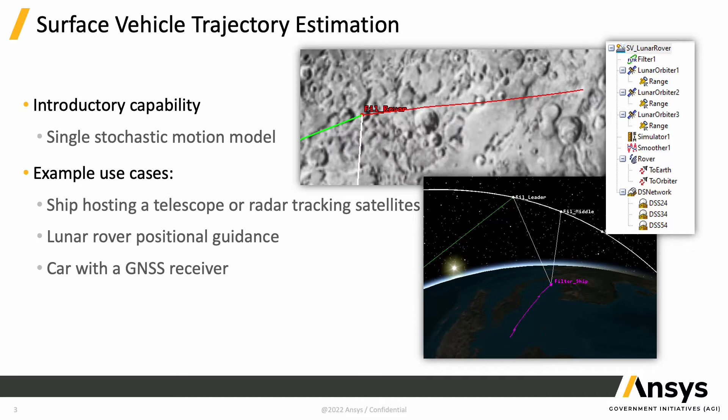Example use cases include a ship hosting a telescope to track satellites, a lunar rover or any body doing positional guidance, and even a car with a GNSS receiver on Earth or really on any planetary body.